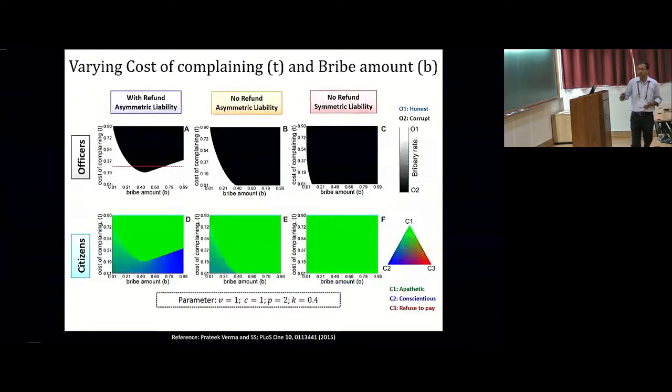We simulated this model using both replicator dynamics as well as agent-based stochastic simulations, and this is a plot showing the effect of the replicator dynamics. We looked at a large variety of parameters and situations, and this is one such plot from this, which compares the different scenarios of asymmetric and symmetric penalty with and without refund. You can see that this is the current scenario which exists, where there are no refunds allowed, the symmetric liability exists, and there's very little region of parameter space for which honest officers can prevail.